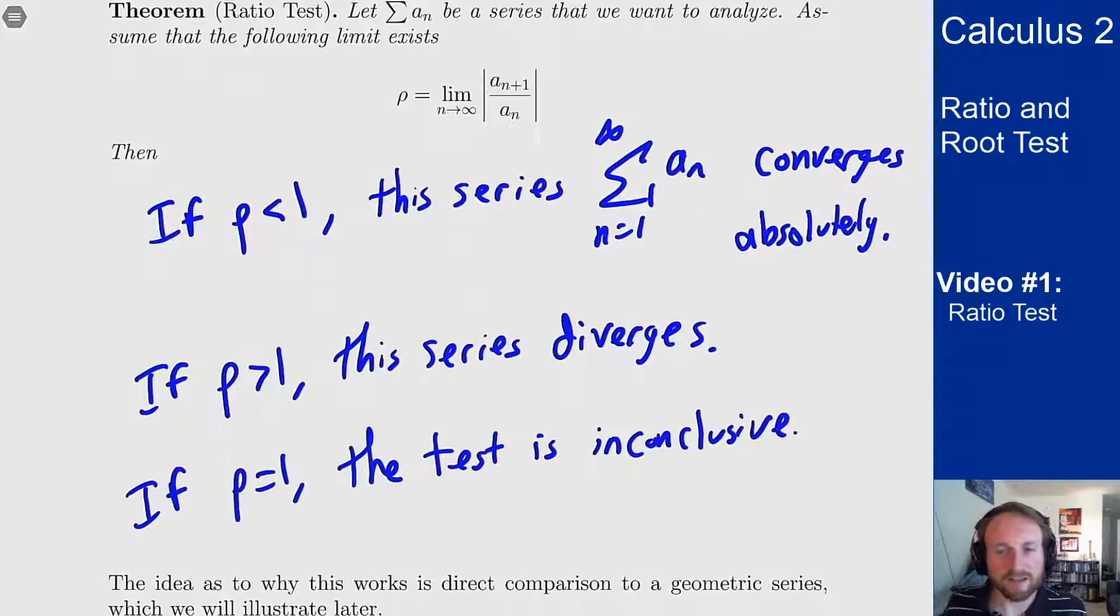This inconclusive test is something like if you had the second derivative test from calc one that would tell you if you had a local max or local min. It was inconclusive about that result. The same idea is here. If I get rho to be one that means I don't know if it converges or diverges. I have no answer yet. I must do more work to figure out what actually happens to this series.